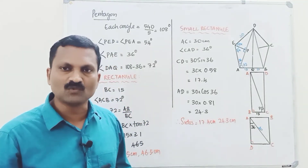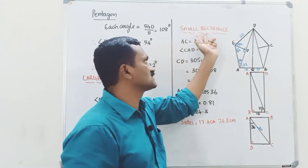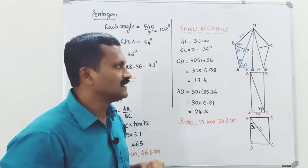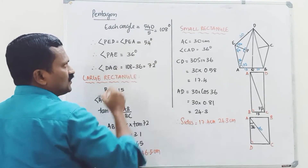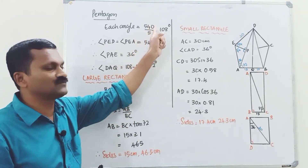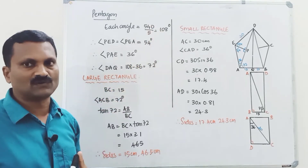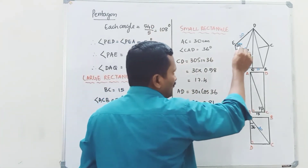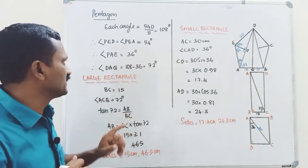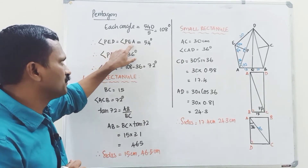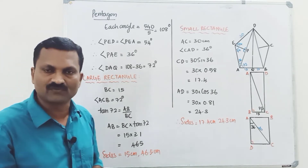The answer has three parts: the pentagon, one large rectangle, and one small rectangle. For the pentagon, each interior angle equals 540 divided by 5, which is 108 degrees. The diagonal bisects the angle, so angle PED equals angle PAE equals 108 divided by 2, which is 54 degrees.